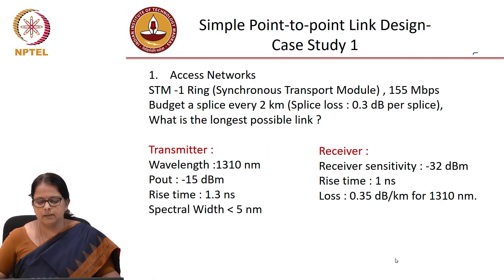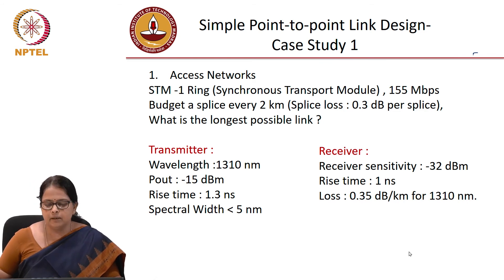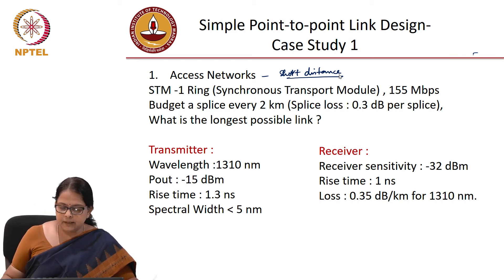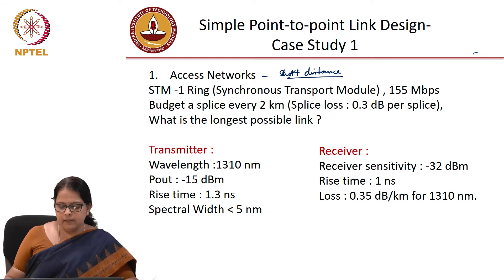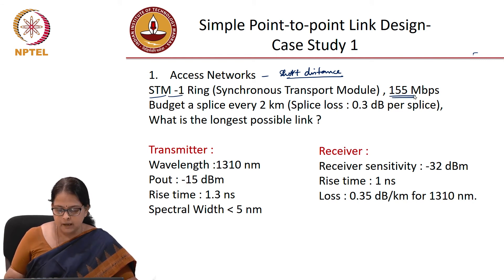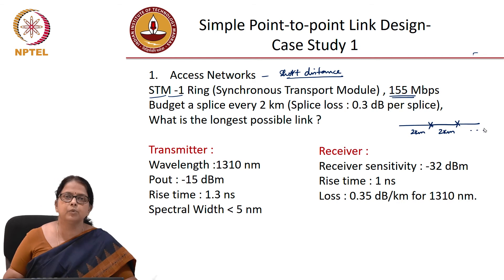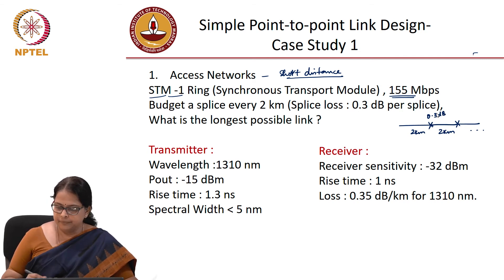The first tutorial exercise is a simple point-to-point access network link study. It is an STM-1 link — a synchronous transport module standard from ITU/IEEE — operating at 155 Mbps. A splice is budgeted every 2 km, with a splice loss of 0.3 dB per splice. The transmitter is at 1310 nm with output power of −15 dBm, rise time τ_tx = 1.3 ns, and spectral width of 5 nm. The question is: what is the longest possible link?